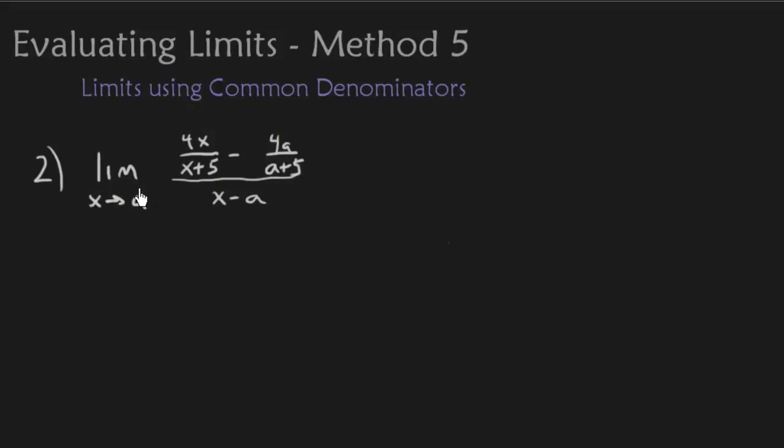In this example we have the limit as x approaches a of 4x over x plus 5 minus another fraction, all over x minus a. So let's see what happens when we plug in a. So we're going to get 4a over a plus 5, that's fine, minus 4a over a plus 5, all over a minus a.